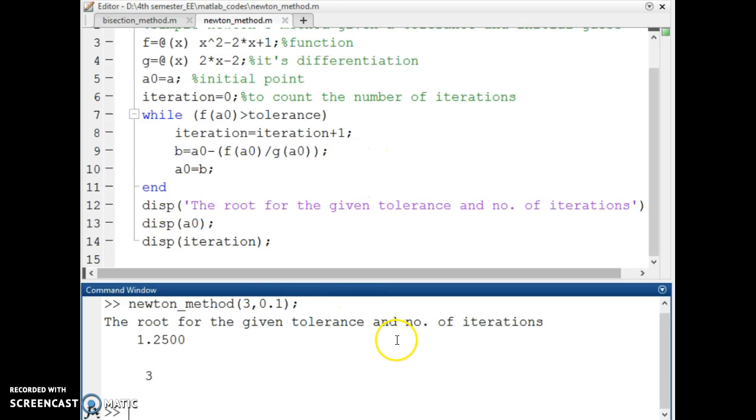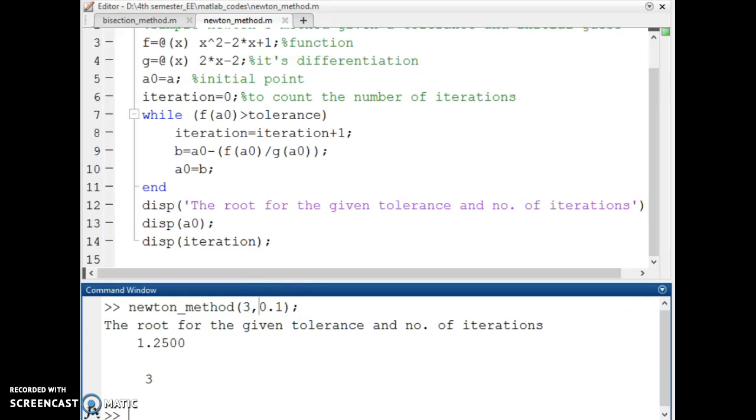And the root for the given tolerance and number of iterations are 3. The root for the given tolerance is 1.25. Let's check. I had put a tolerance level of 0.1.